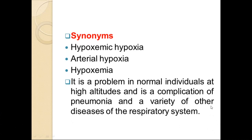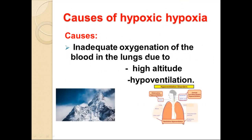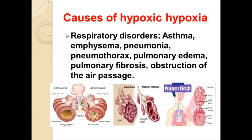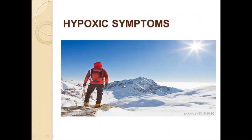Hypoxic hypoxia is also known as hypoxemic hypoxia, arterial hypoxia, and hypoxemia. The most common physiological example is high altitude. It is also a complication of pneumonia and a variety of other respiratory diseases. Causes include inadequate oxygenation of blood in the lungs due to high altitude, hypoventilation, respiratory disorders like asthma, emphysema, pneumonia, pneumothorax, pulmonary edema, pulmonary fibrosis, right-to-left cardiac shunt, and depression of the respiratory center by drugs like morphine.